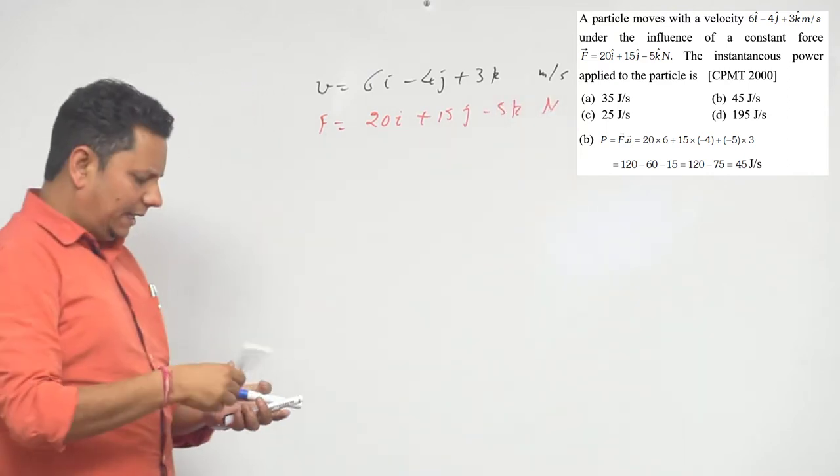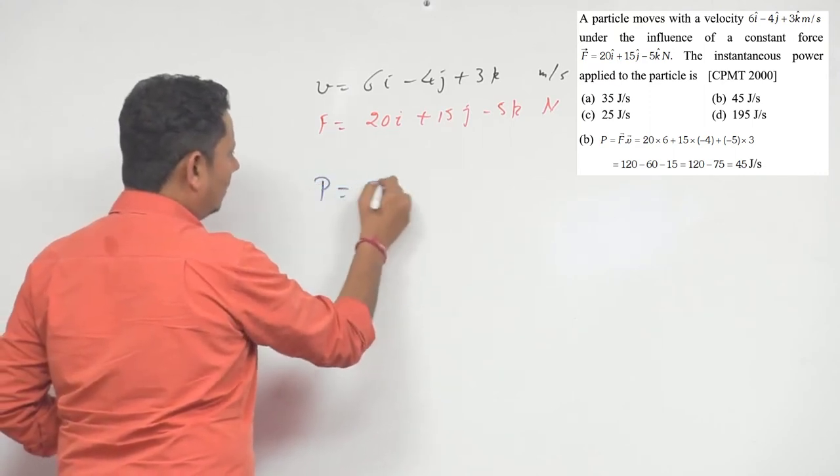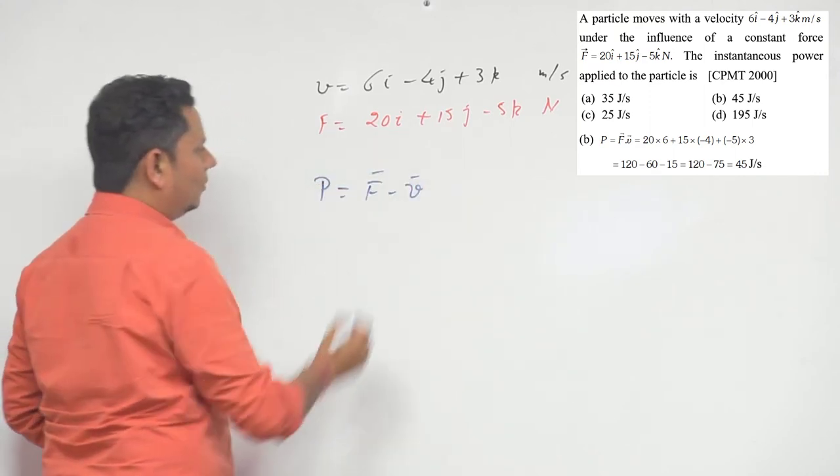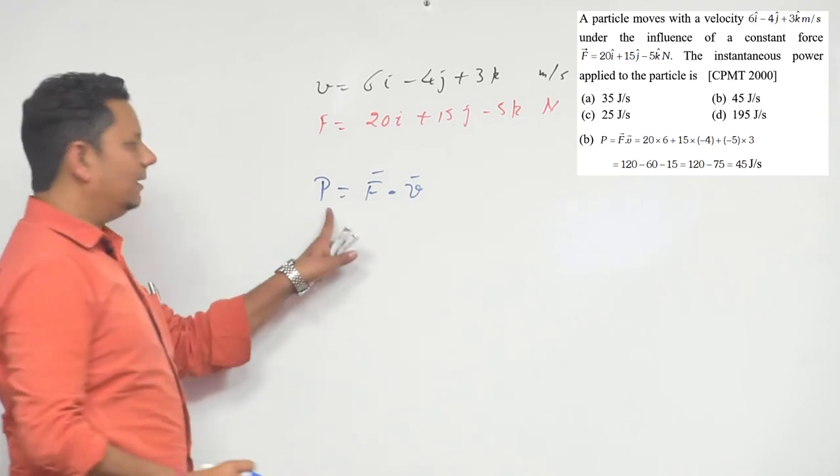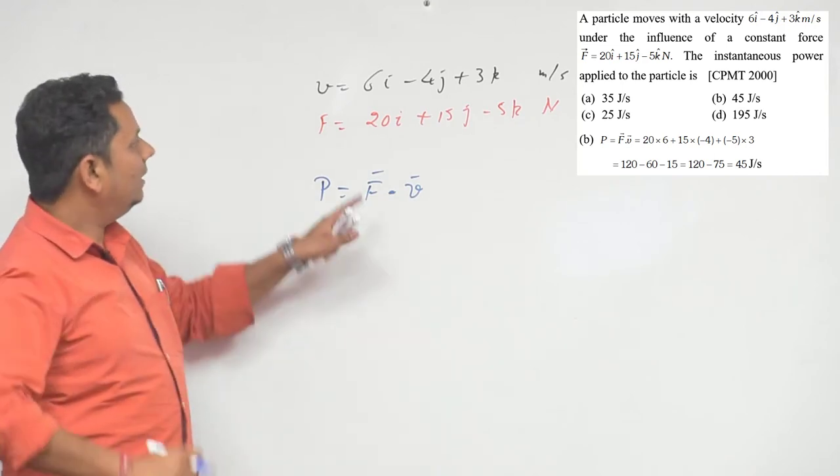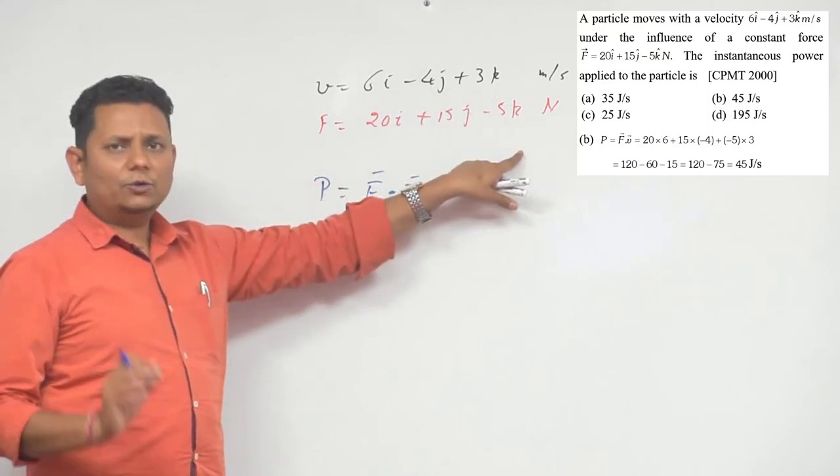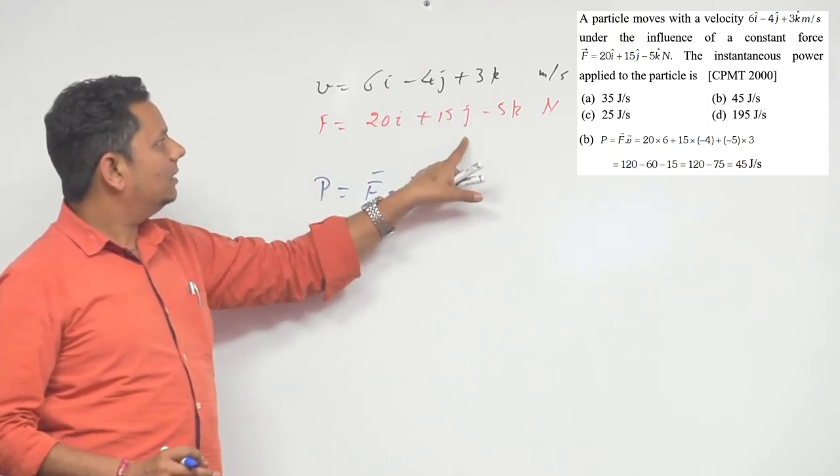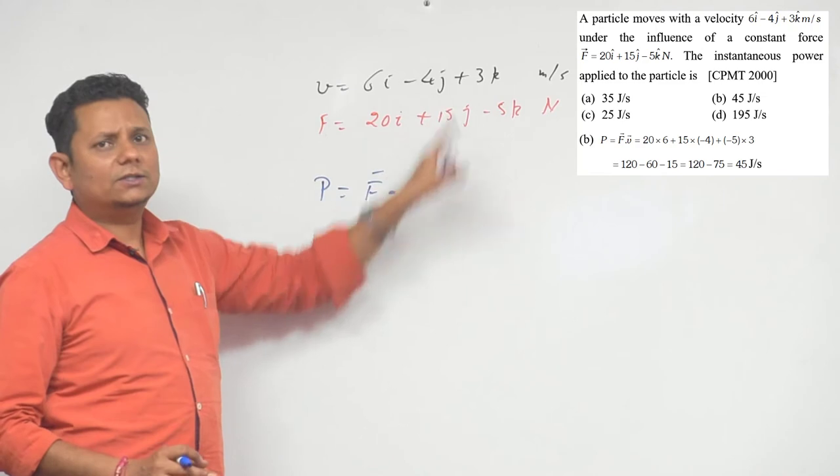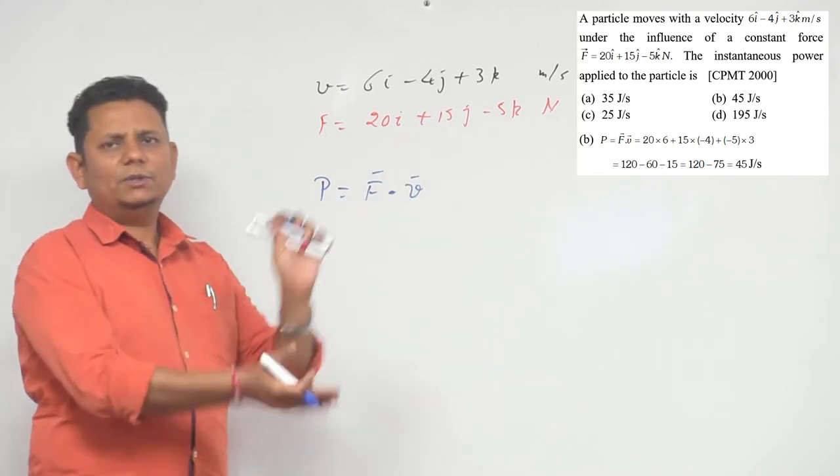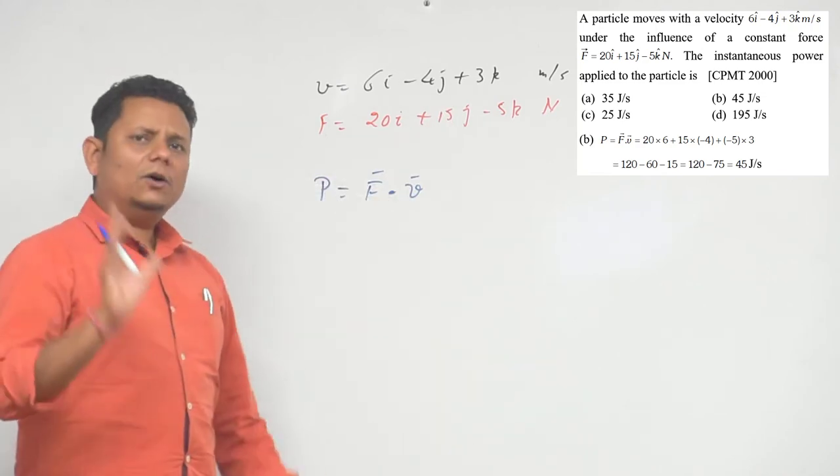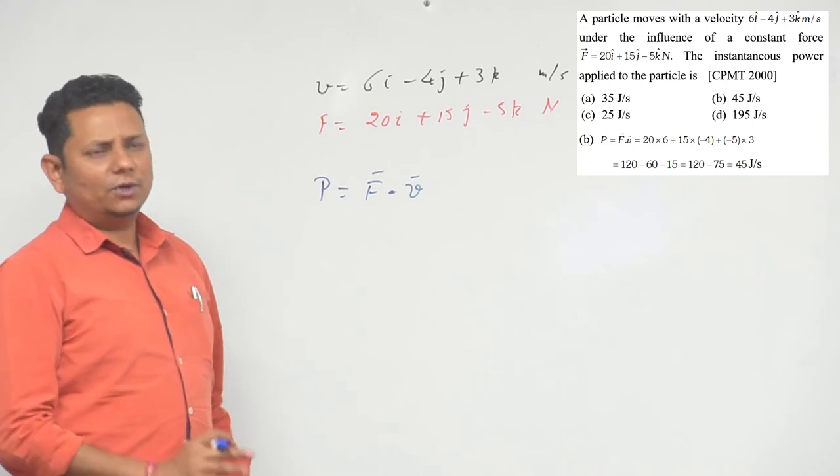You know that power P will be equal to F dot v. When we take the dot product of these two, we'll get our power, and power will be a scalar quantity. In vector dot product, we simply multiply i with i, j with j, and k with k. Terms like i dot j, i dot k, and k dot j will all be zero because the angle between them is 90 degrees, so the dot product is zero.